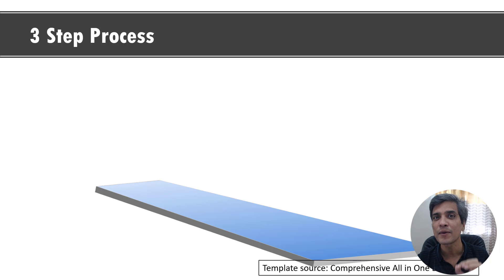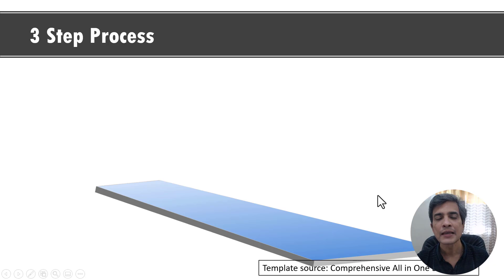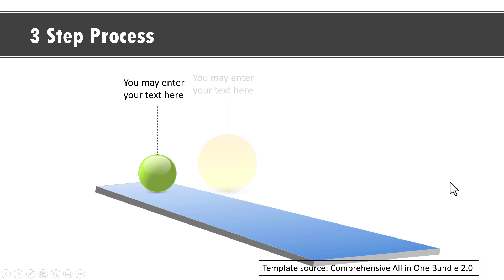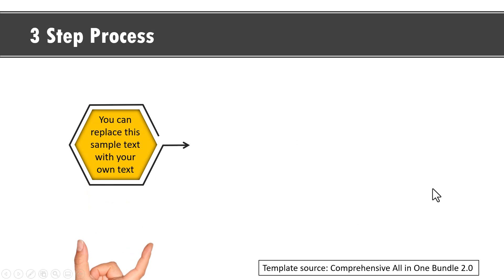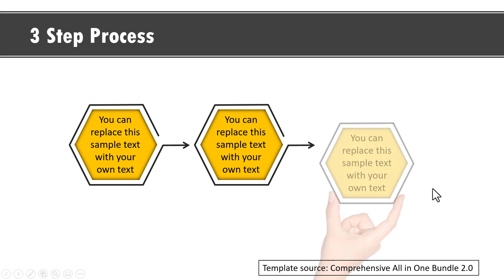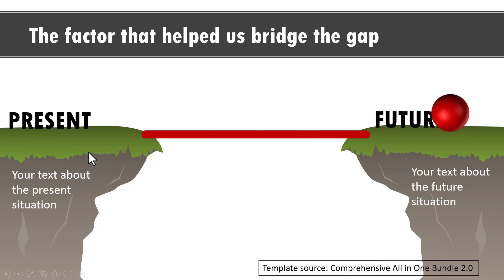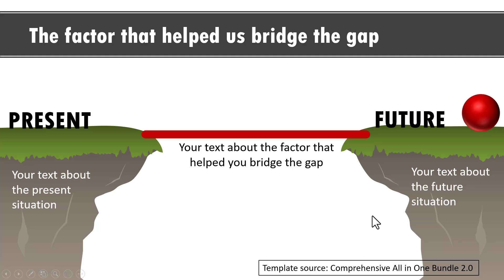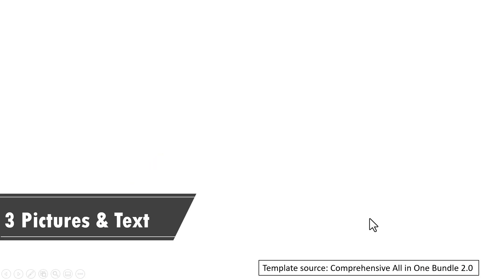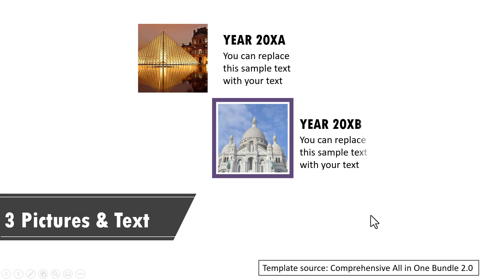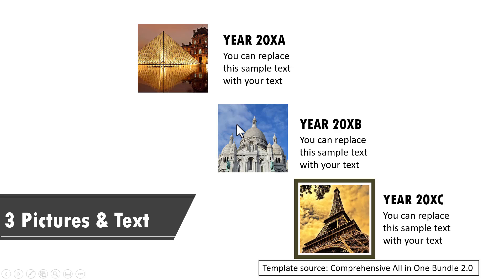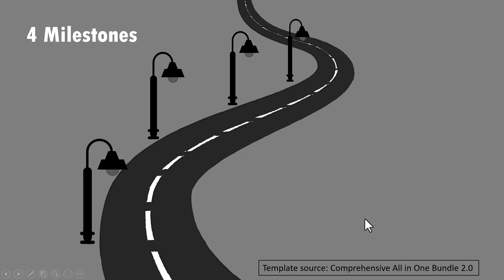Let me show you some example templates from our comprehensive all-in-one PowerPoint bundle that shows you how to add creative custom animation to your timelines. This is a three-point timeline — on a click we have the first point, second, and third shown. Another example has three points revealed one by one. Another is a concept animation showing the transition from present to future where a hand draws the path. Another example showcases three pictures for a timeline, and you can replace these pictures with your own quite easily.